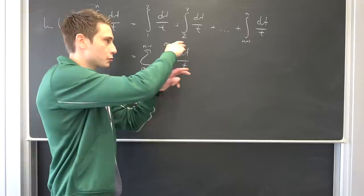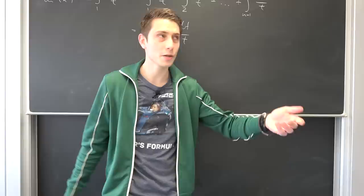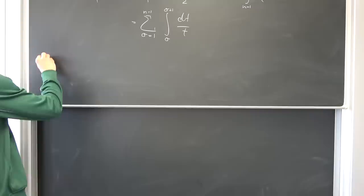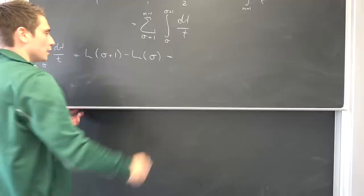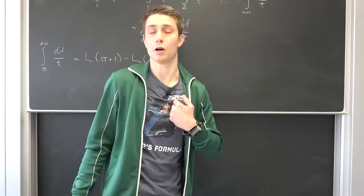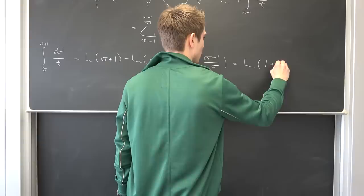We want to show those partial integrals are bounded above by something. Let's look at the integral from σ to σ+1 of dt/t, which equals ln(σ+1) − ln(σ) = ln((σ+1)/σ) = ln(1 + 1/σ). We want to find an upper bound for ln(1 + 1/σ).